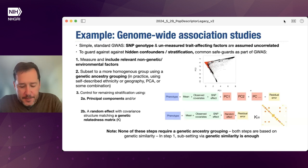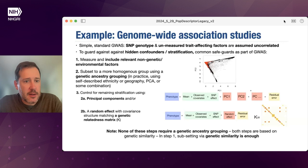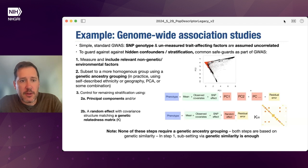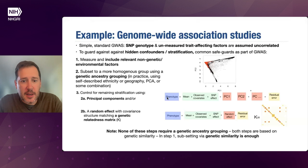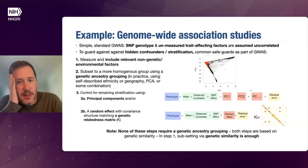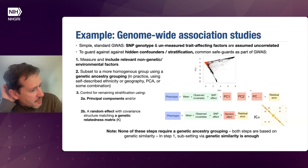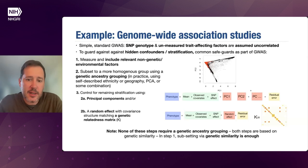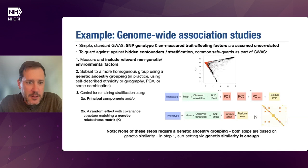One way to try to avoid these confounders is to try to measure them — including the relevant non-genetic environmental factors into your linear model for doing a genome-wide association study of phenotype on SNP. If you include those factors, then there are no hidden confounders and no stratification problem. That goes back to the broad recommendation of measuring environmental factors.